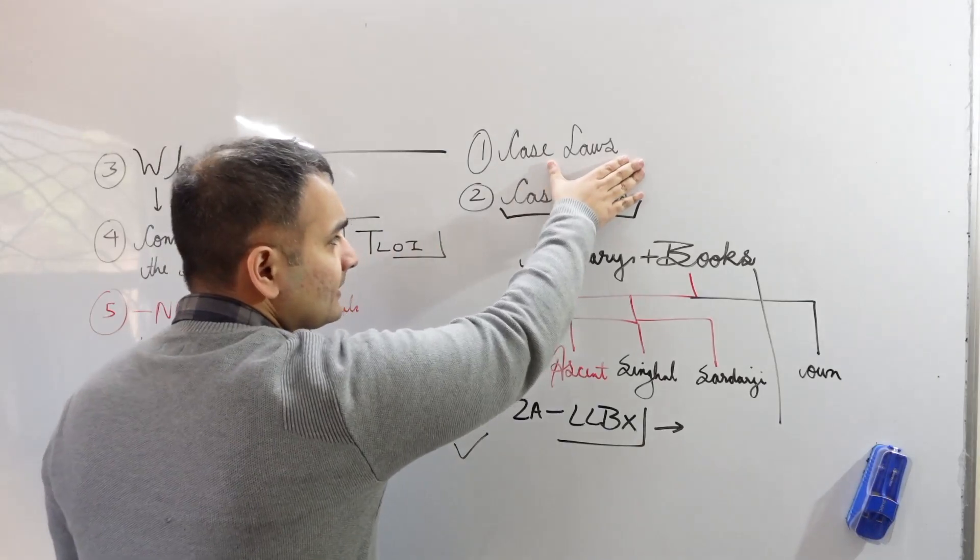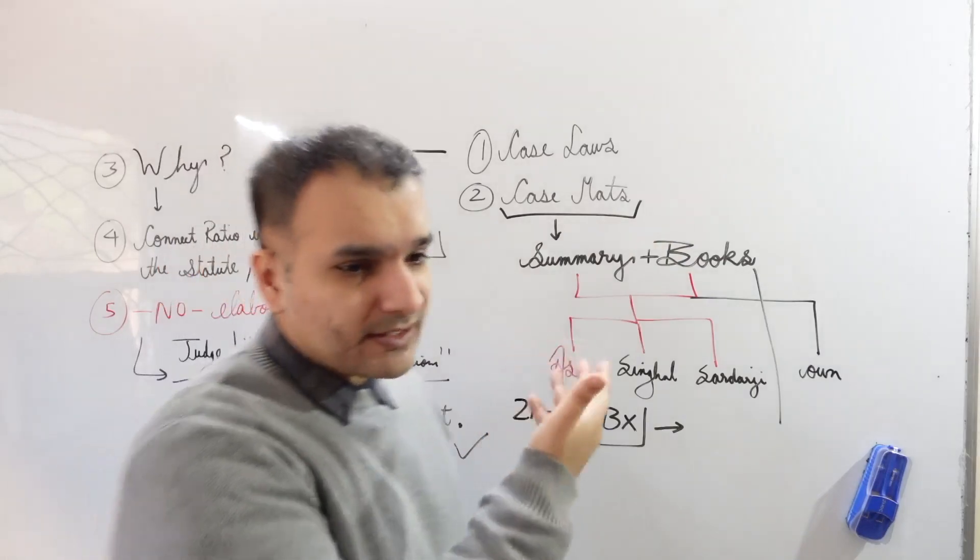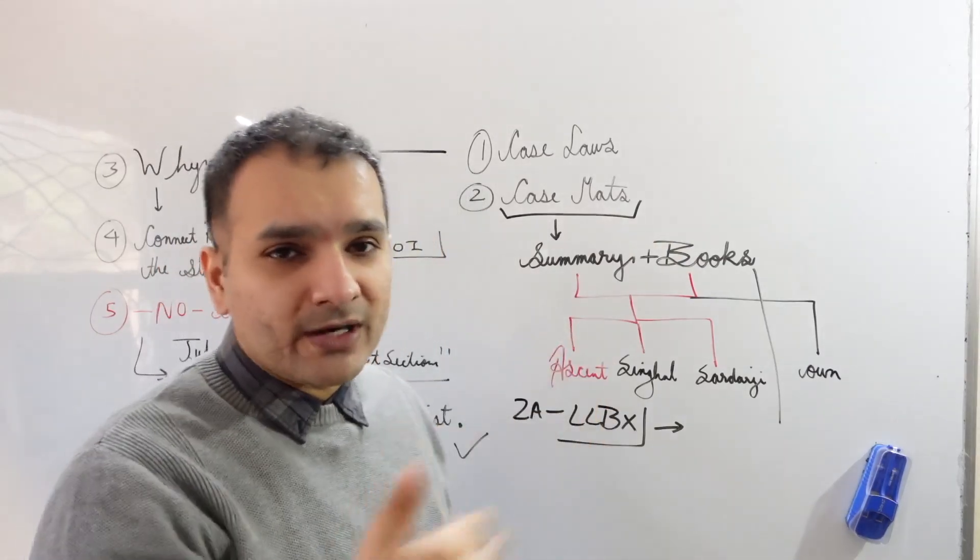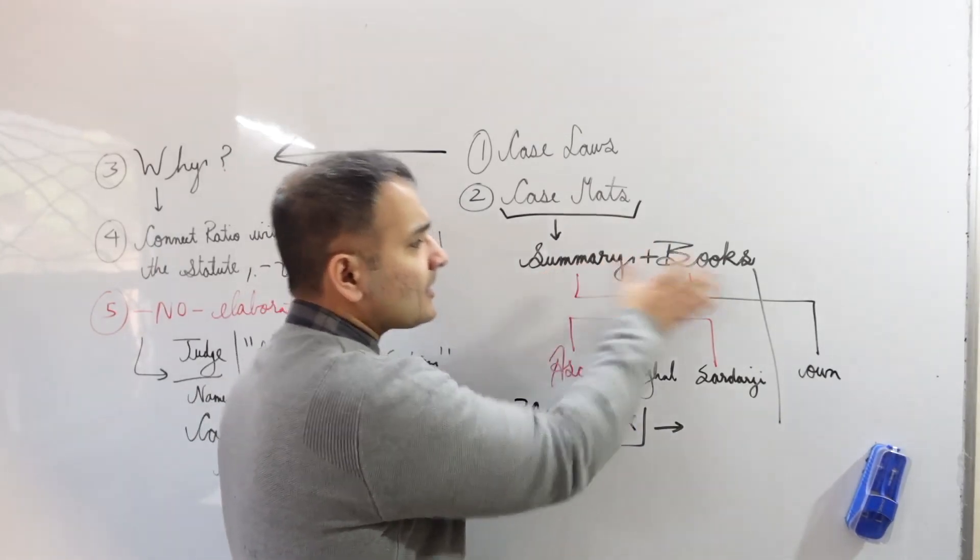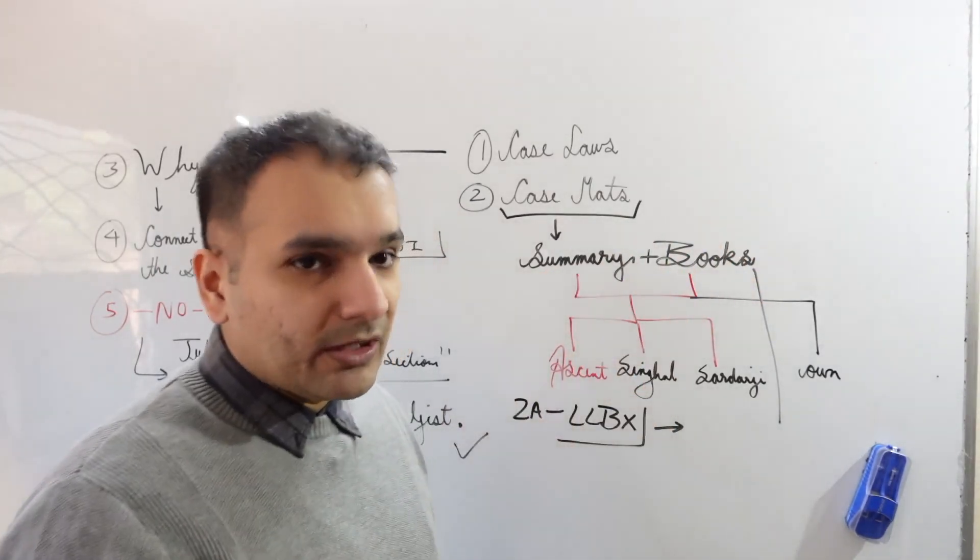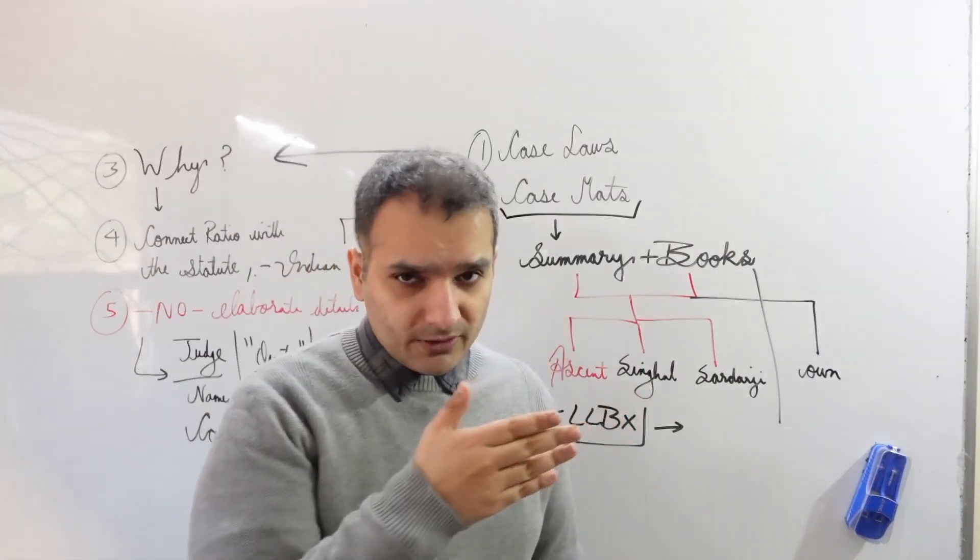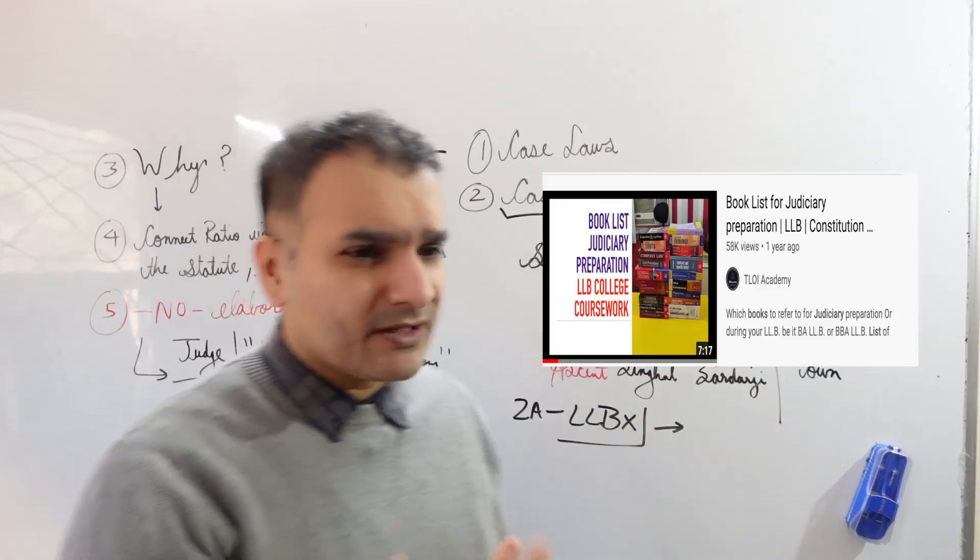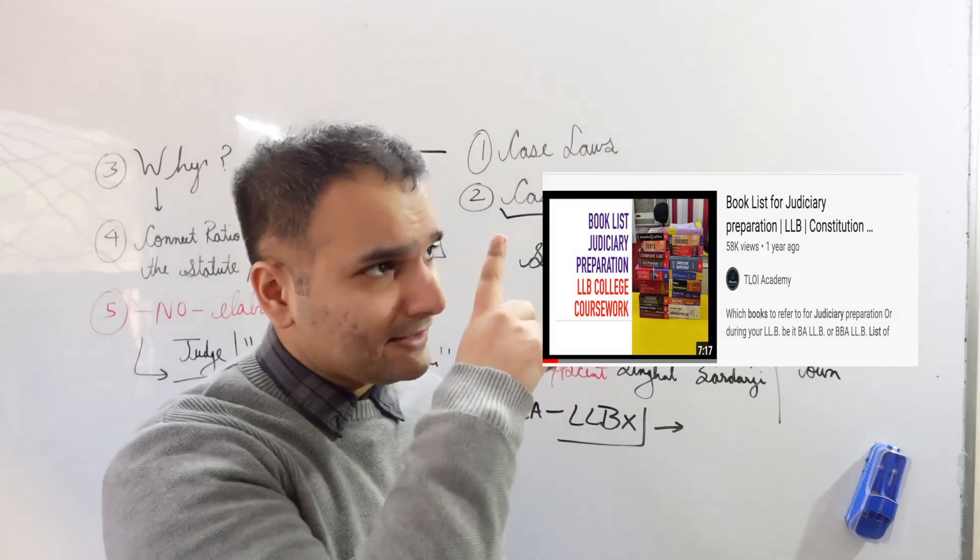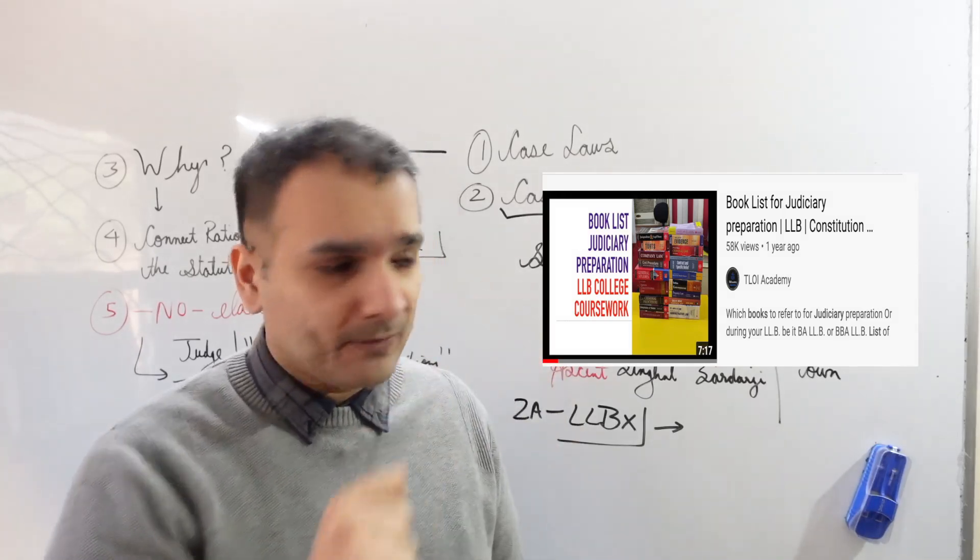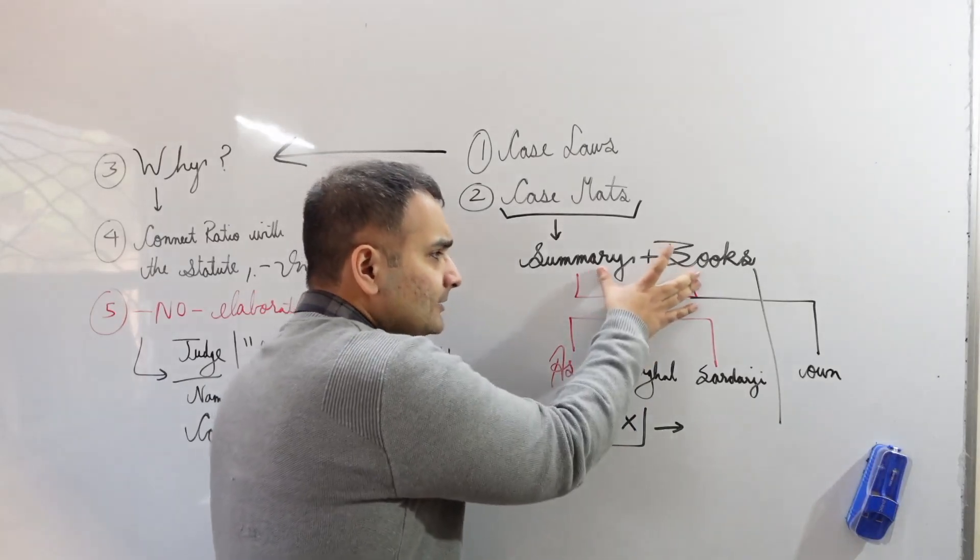Case laws are given in case maps only, but what exactly is the purpose of case maps? You have to extract out your own summary and couple it with the book. Where are these books? I've already made a video on this, titled for judiciary but applicable to LLB as well. I'll link it in the description or the card above.